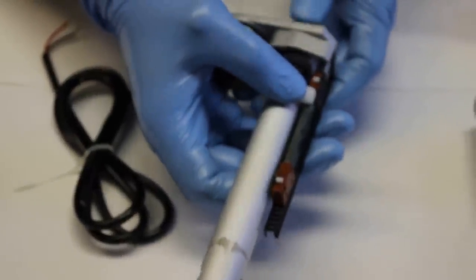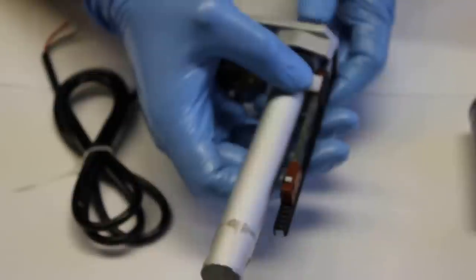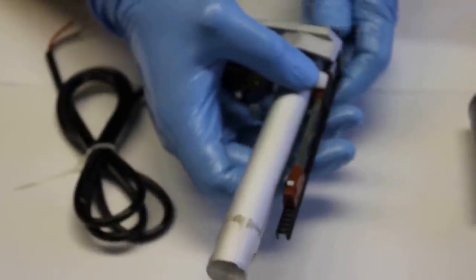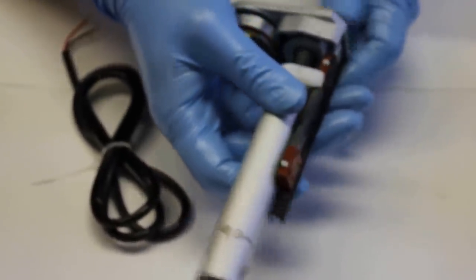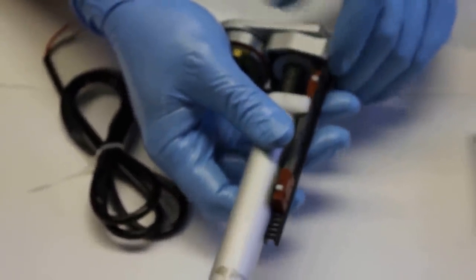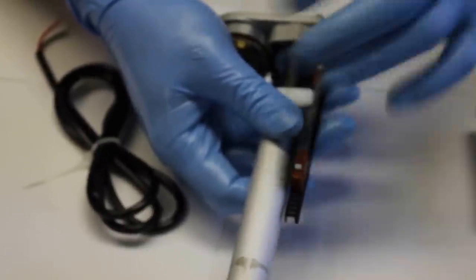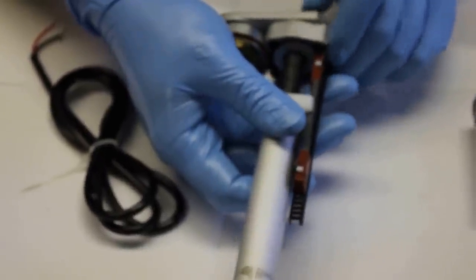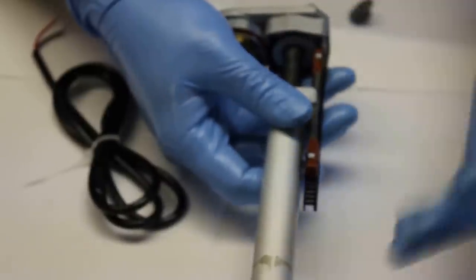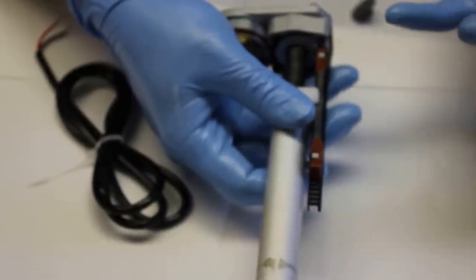So many times you'll notice some of our actuators have different forces but have the same dimension. Usually what that means is this lead screw here. We will change the pitch and the width between the threads, which will either have it move faster or slower and control the force that way as well.